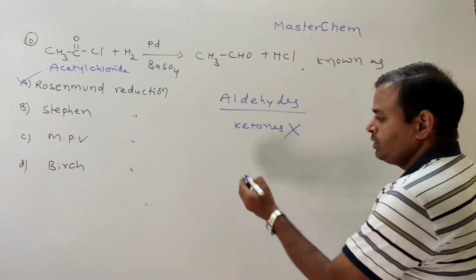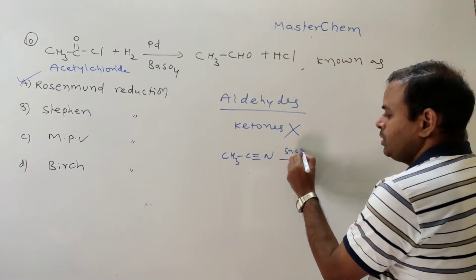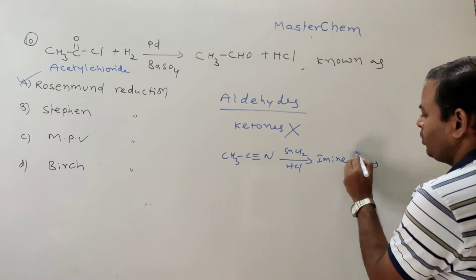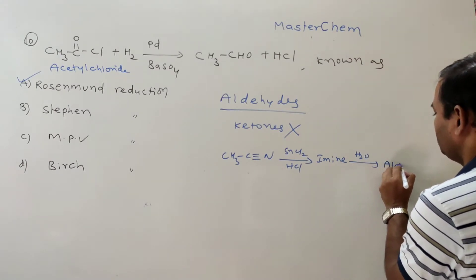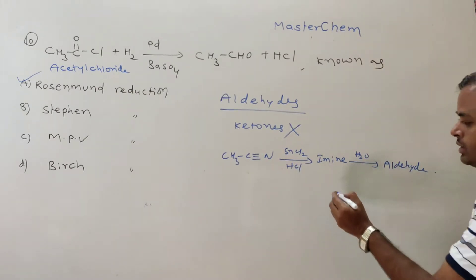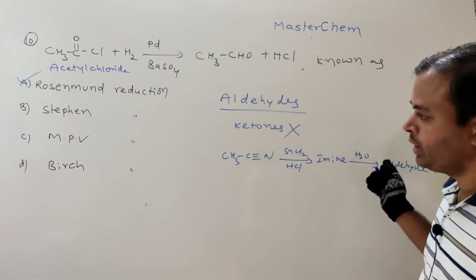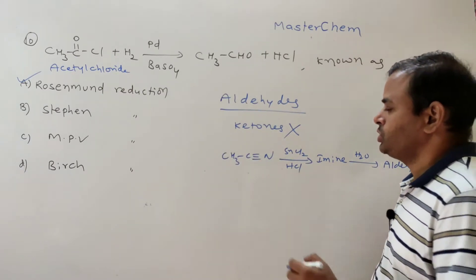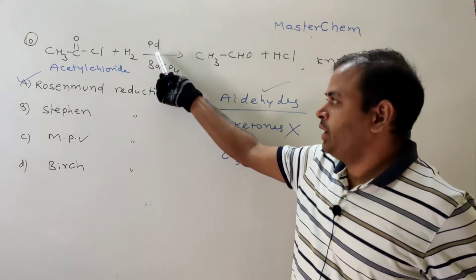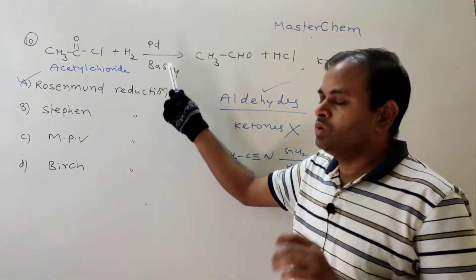We also know Stephen reduction: alkyl cyanide (CH₃CN) with SnCl₂ and HCl gives the corresponding imine, which on hydrolysis gives aldehyde. This is also an exclusive method for the preparation of aldehydes only. The Rosenmund reagent is H₂ in the presence of palladium and BaSO₄.